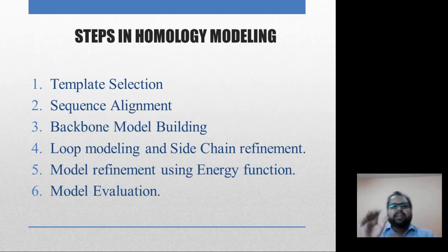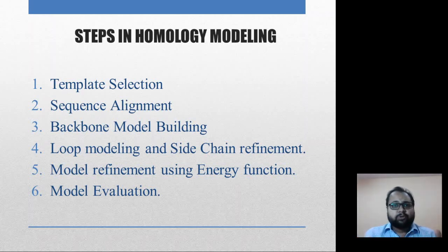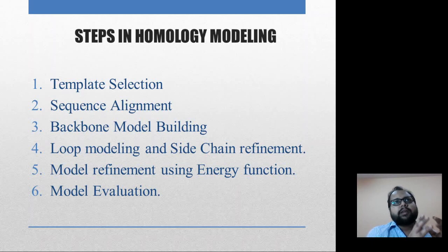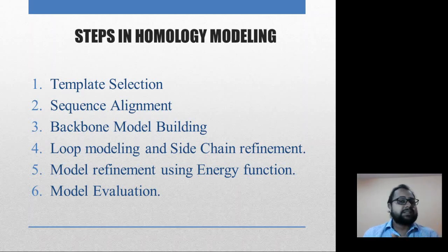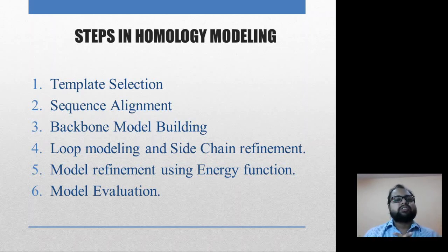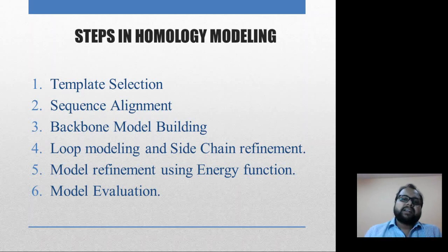Then comes model refinement, where you check whether the shape of the eyes, ears, and hands has been perfected or not. After that comes the final model evaluation to ensure there are no issues with anything. The six steps of homology modeling are: first, template selection; second, sequence alignment; third, backbone model building; fourth, loop modeling and sidechain refinement; fifth, model refinement using energy functions; and sixth, model evaluation.